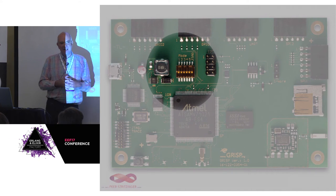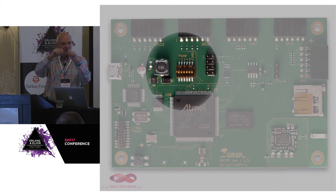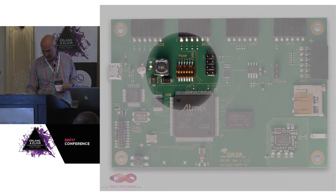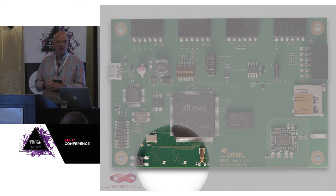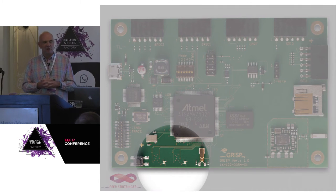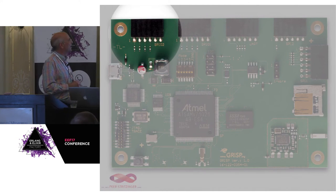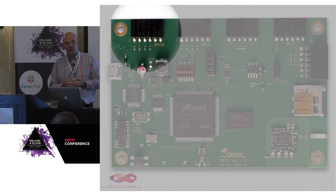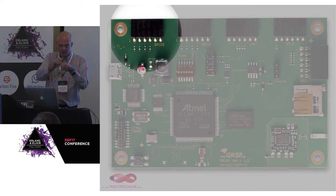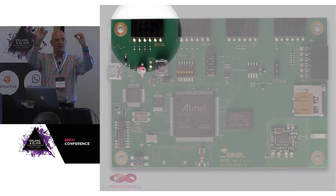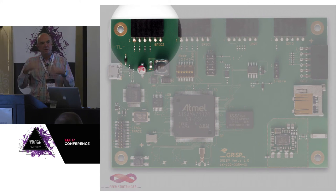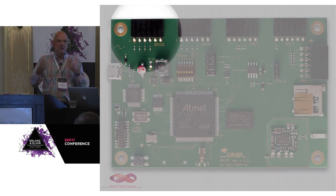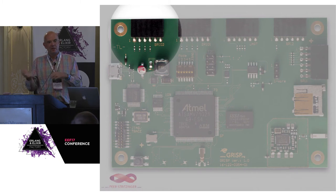We have five switches on the board which you can read out from your program — you can configure it somehow like without a config file. The two small dots are red-green-blue LEDs. It's always nice to have an LED to show a blinking light — everybody loves blinking lights. The black connectors on the outside are connectors for a module system called PMODs. These are little modules — I have them here. They're from Digilent, which is now owned by National Instruments — the LabVIEW/Simulink people — and they have a lot of IO modules for that.